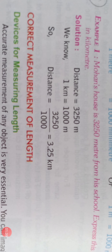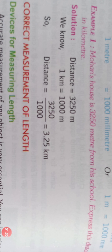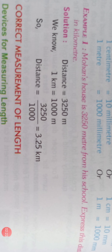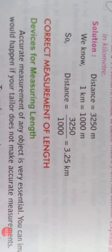Here is another example to solve: Mohan's house is 3250 meter from his school — express this distance in kilometers. Mohan's house distance to his school is 3250 meter. You know very well that 1 kilometer is equal to 1000 meter. So 3250 meter is equal to 3250 divided by 1000, which equals 3.25 kilometers. In this way you can change meter into kilometer by dividing the amount by 1000.